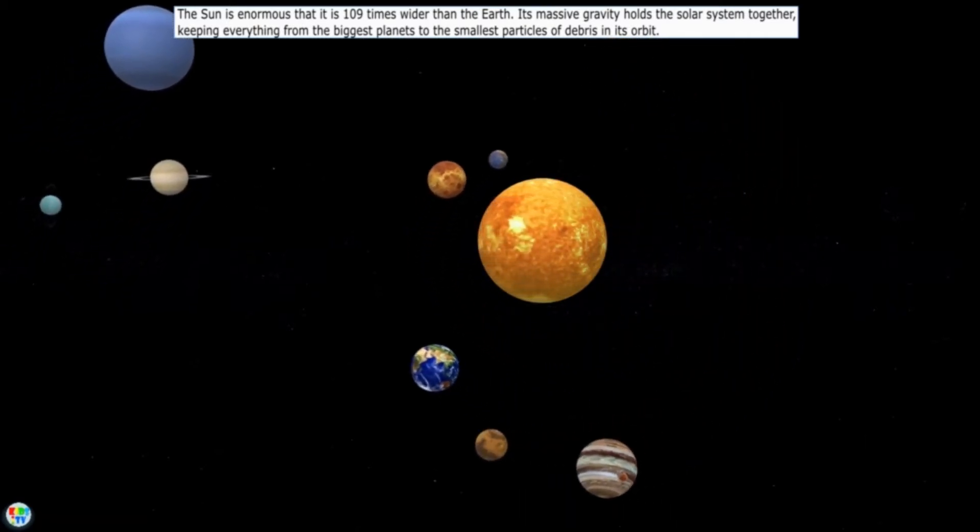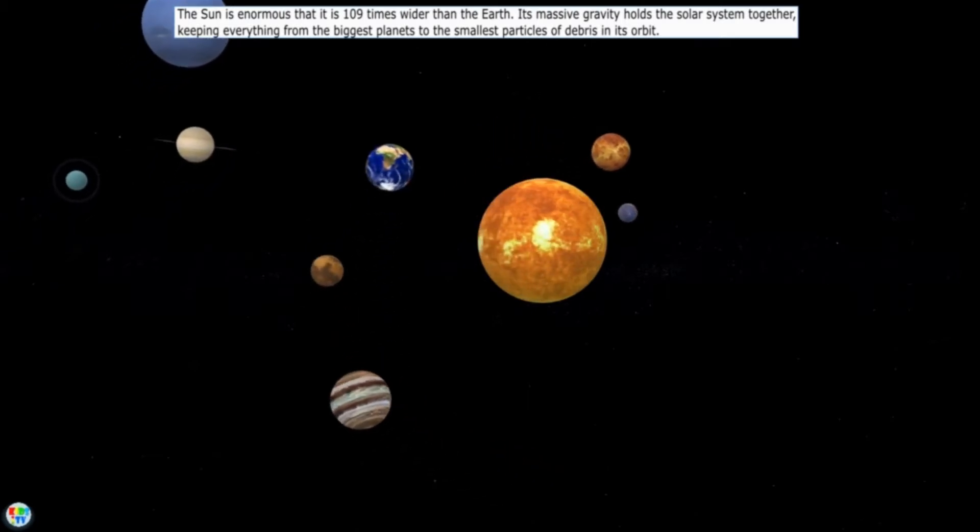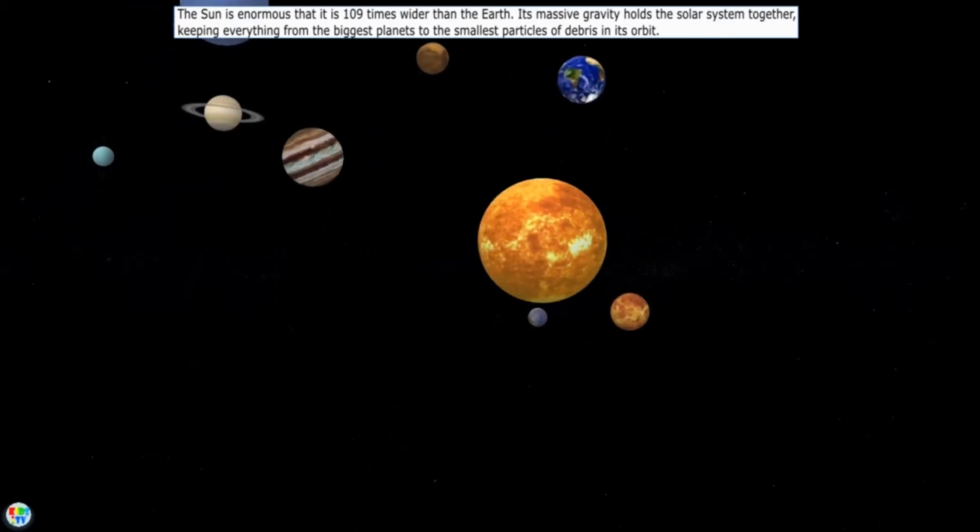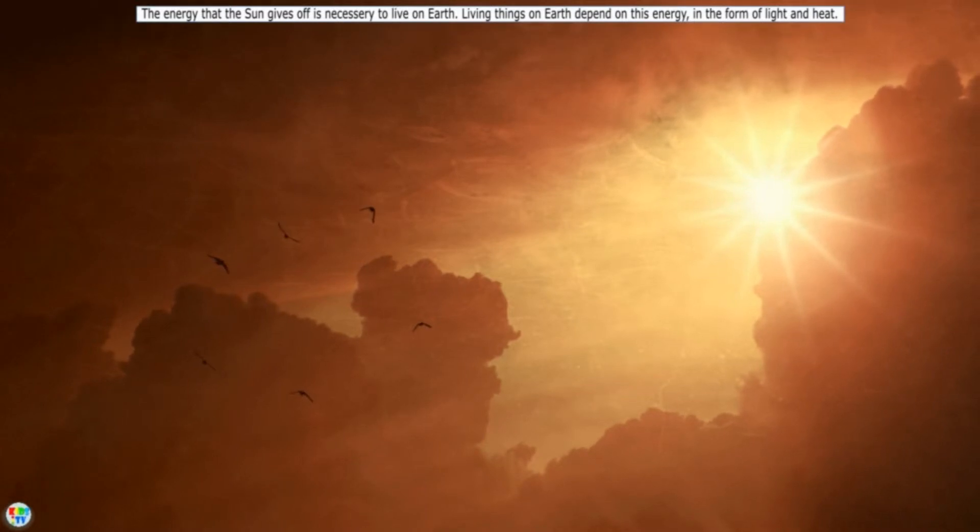Its massive gravity holds the solar system together, keeping everything from the biggest planets to the smallest particles of debris in its orbit. The energy that the Sun gives off is necessary to live on Earth. Living things on Earth depend on this energy in the form of light and heat.